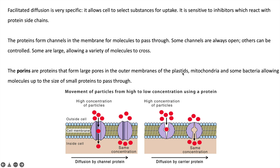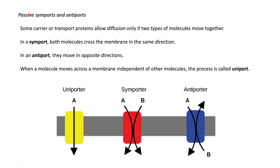The proteins present on the outer membrane of plastids and mitochondria are called porins. There are some bacteria which allow molecules up to the size of small proteins to pass through. This completes the overview of facilitated diffusion.